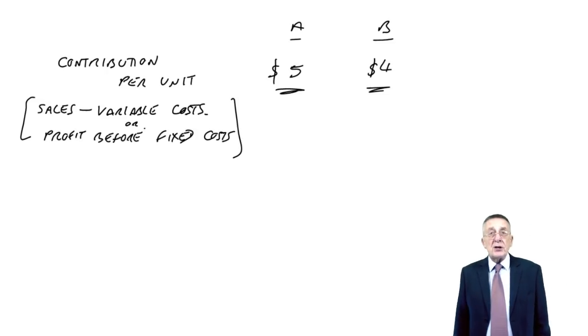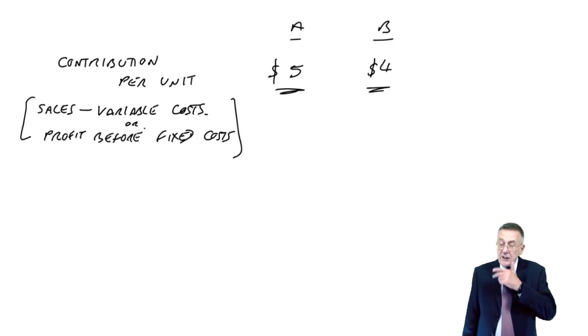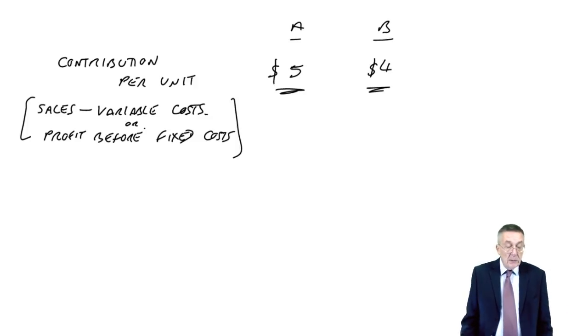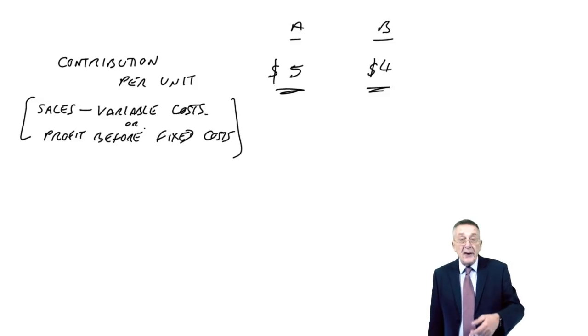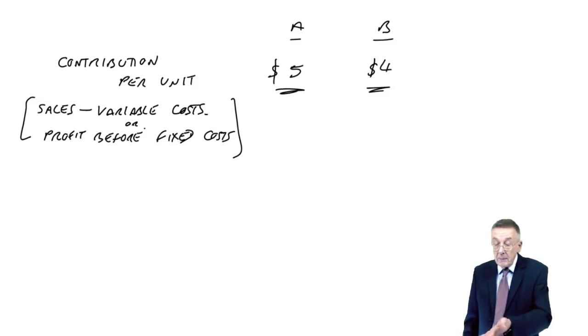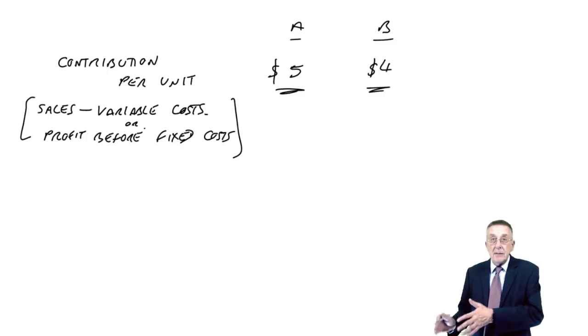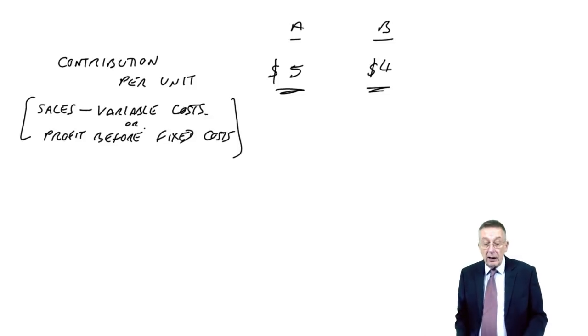And again, remember, what we're trying to do is how many should we make of each of them, and it looks as though A's the better one at $5 a unit. But there's a problem. Look at the machine hours. Every A takes two hours. Every B only takes one hour. So surely, if I've two hours available, I can either make one A and get five dollars, or with two hours I can make two B's and make eight dollars. Although there's several ways you can reach the same conclusion, the standard way of deciding which is the better of the two is we look at the contribution per unit and the machine hours per unit.